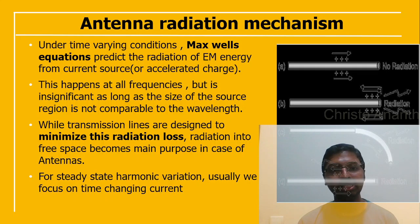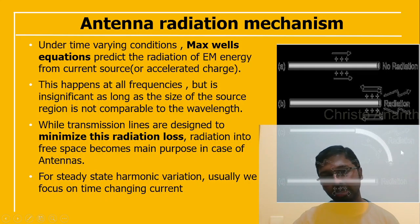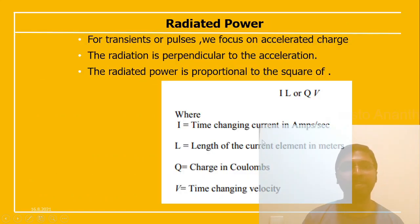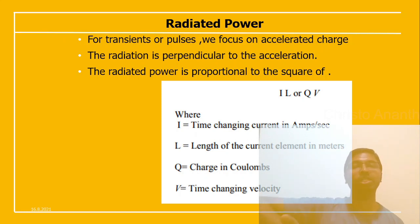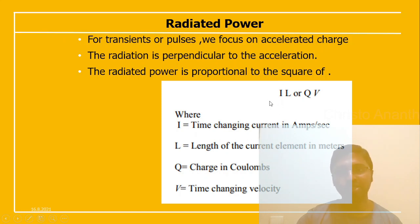For steady-state harmonic variations, we focus on time-changing current. In some configurations there is no radiation, in others radiation propagates in opposite or different directions. Radiated power can be calculated for transients or pulses with accelerated charges. The radiation is perpendicular to the acceleration, and radiated power is proportional to the square of I·l, where I is the time-changing current in amperes, l is the length of the current element in meters, q is the charge in coulombs, and v is the time-changing velocity.